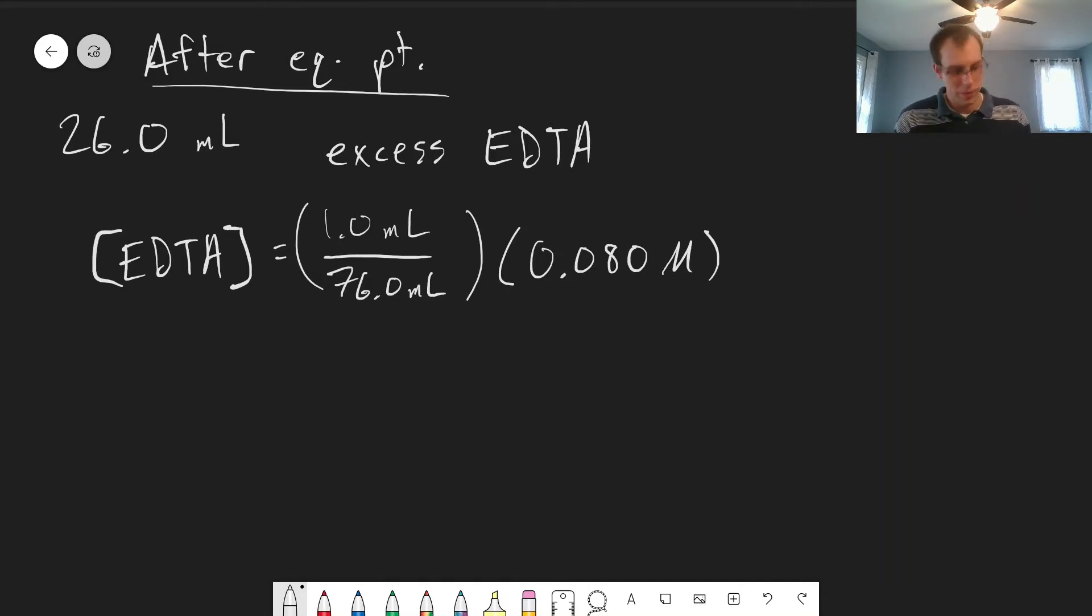This comes from C1V1 equals C2V2. Our one milliliter of excess times 0.08 molar - that's our moles of excess EDTA divided by the final volume of the solution. This gives us a value of 1.05 times 10 to the minus 3 molar.